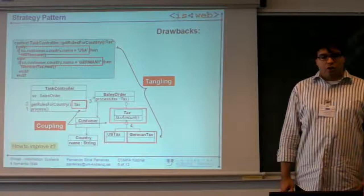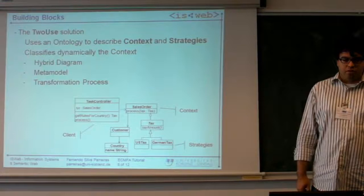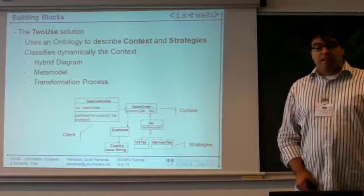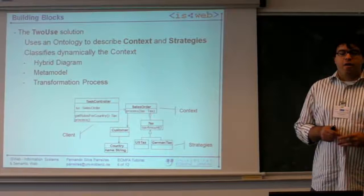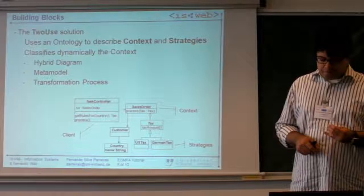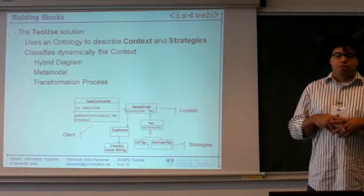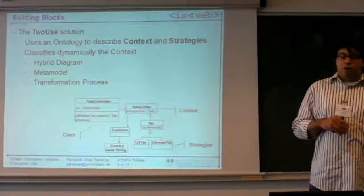How can we solve this problem with ontologies? That's the basic question we want to answer. The idea is that firstly we describe these strategies and this context with OWL descriptions. And then at runtime we let the reasoner classify dynamically the instance to identify whether we have to use one strategy or the other strategy.